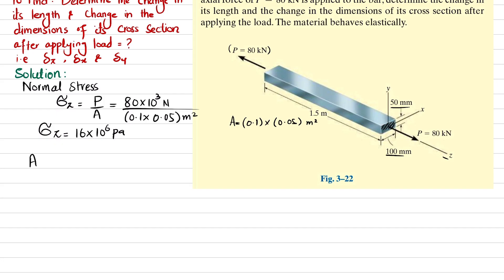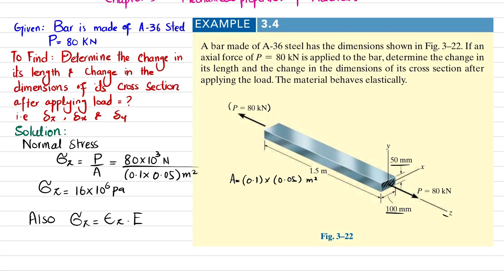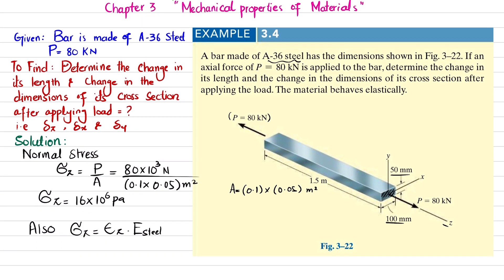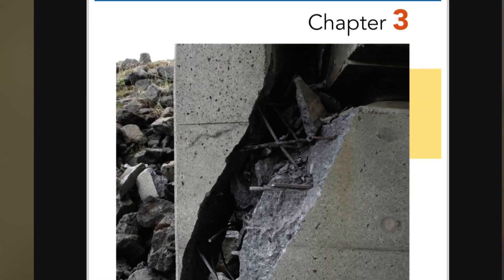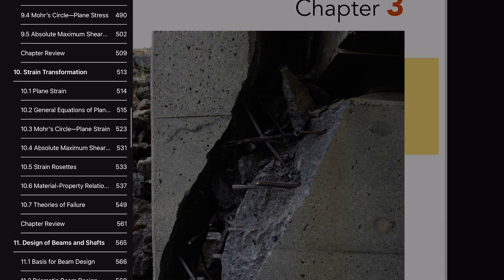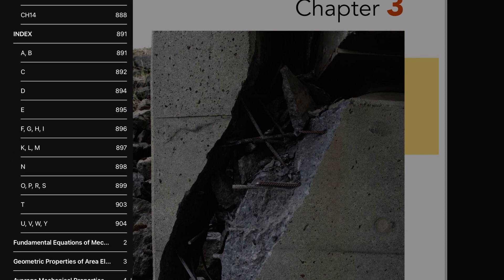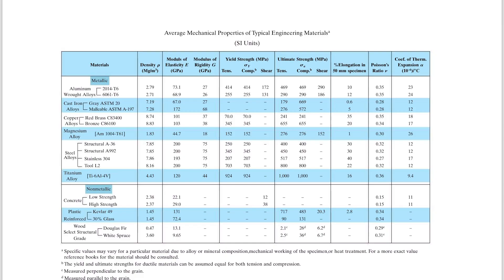We also know that σ_z = ε_z × E, where E is the modulus of elasticity for A36 steel. We look up the material properties: going to the average mechanical properties table at the end of the book, we find for A36 steel that E = 200 GPa, and the Poisson's ratio ν = 0.32.